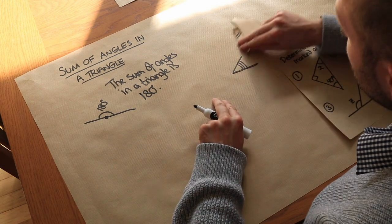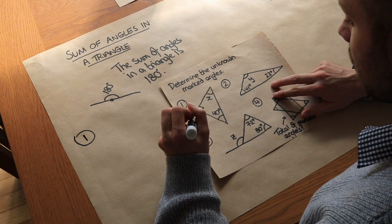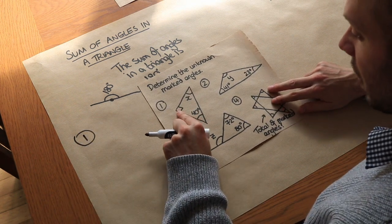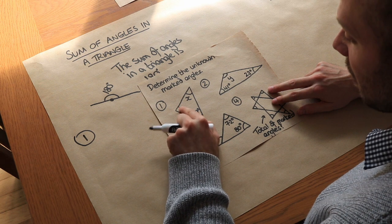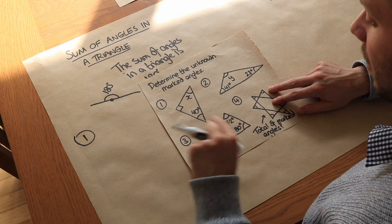So let's use that to solve these particular problems here. We want to determine the unknown marked angles. So we've got this first triangle here, we've got this angle of 90 degrees here. Remember that square just means 90 degrees and we've got 40 and we want to find the remaining angle x.